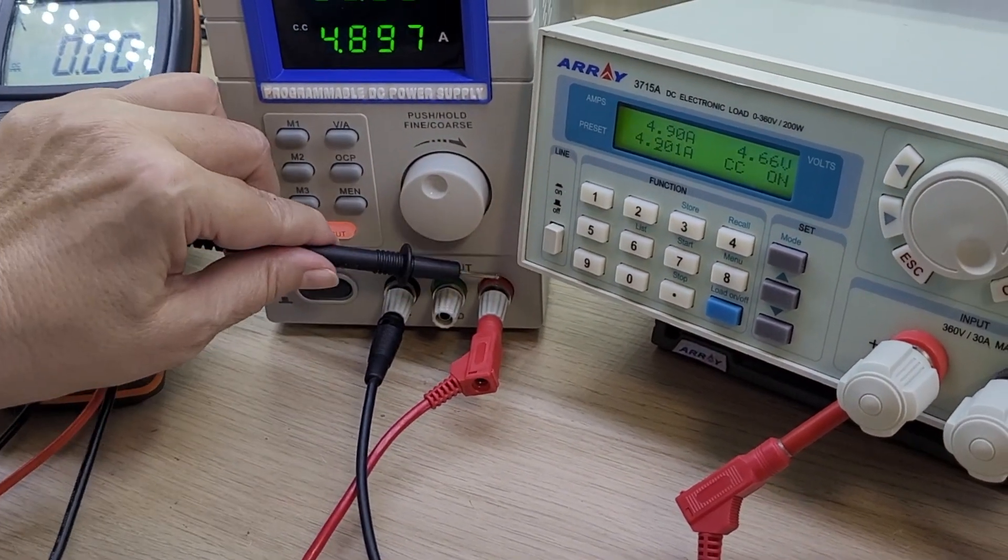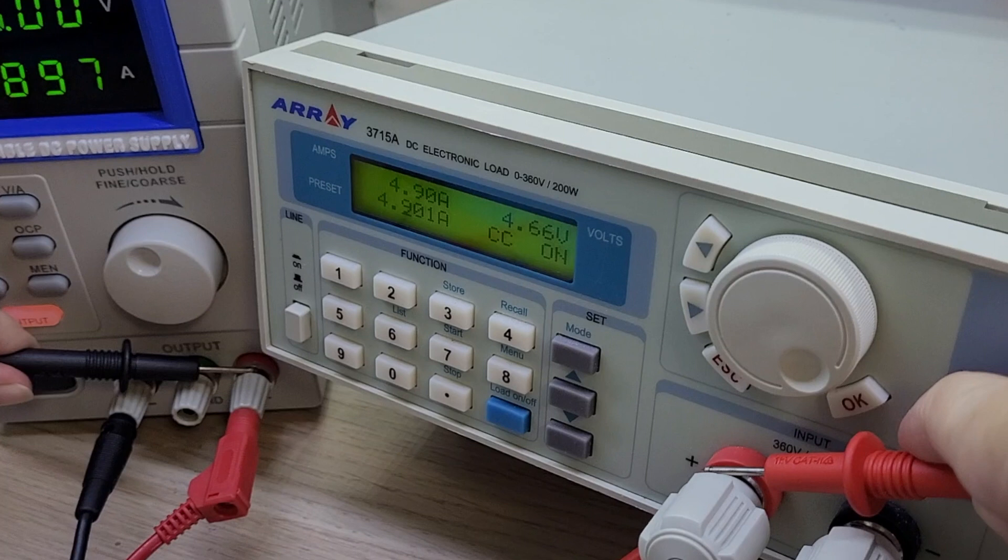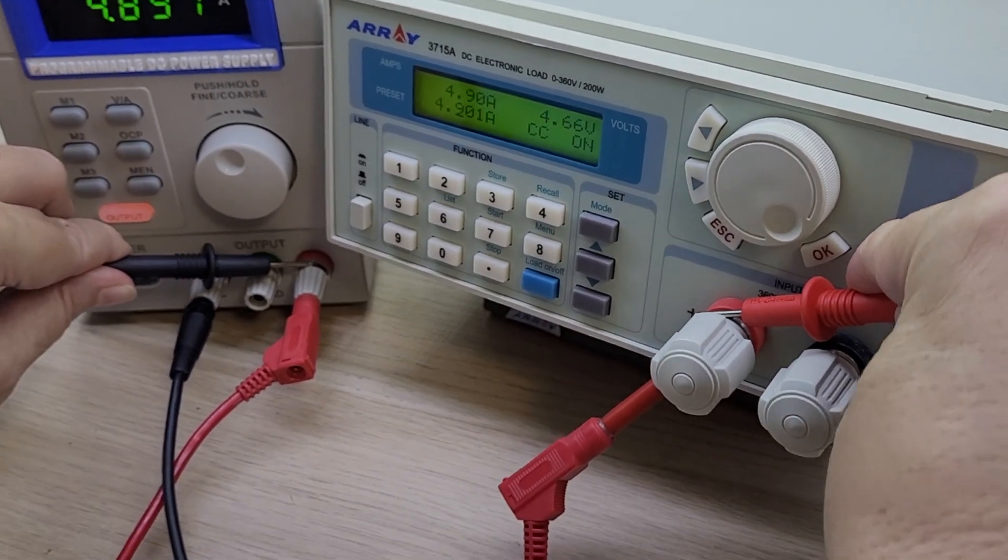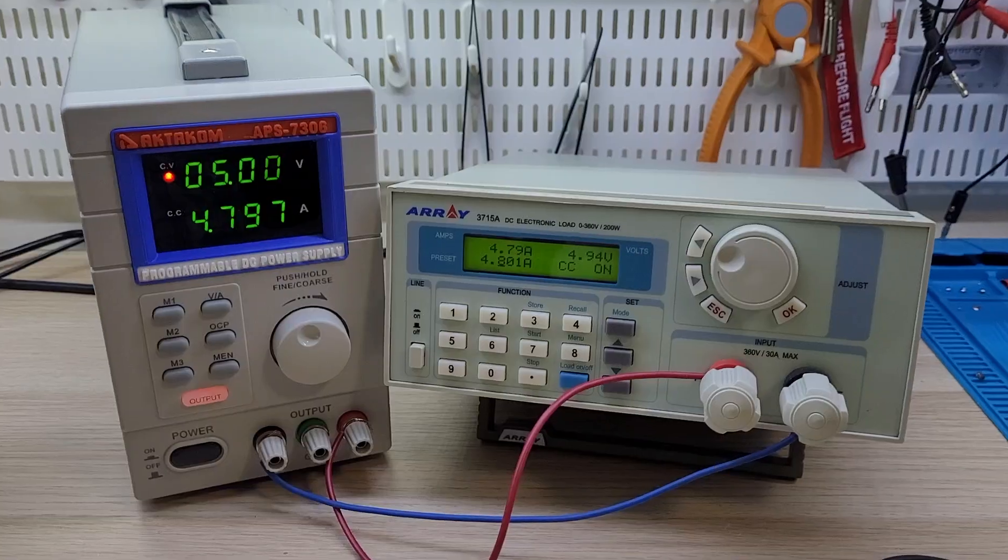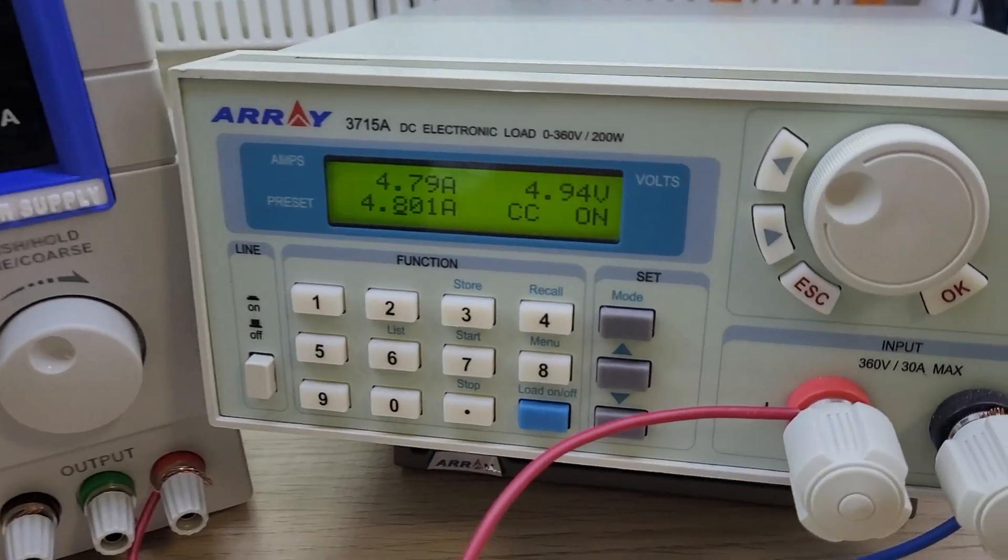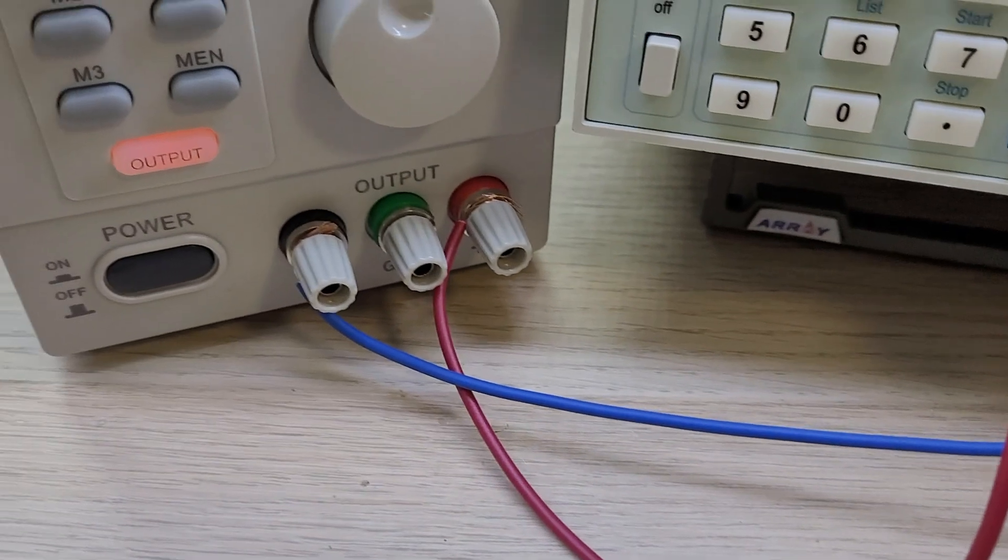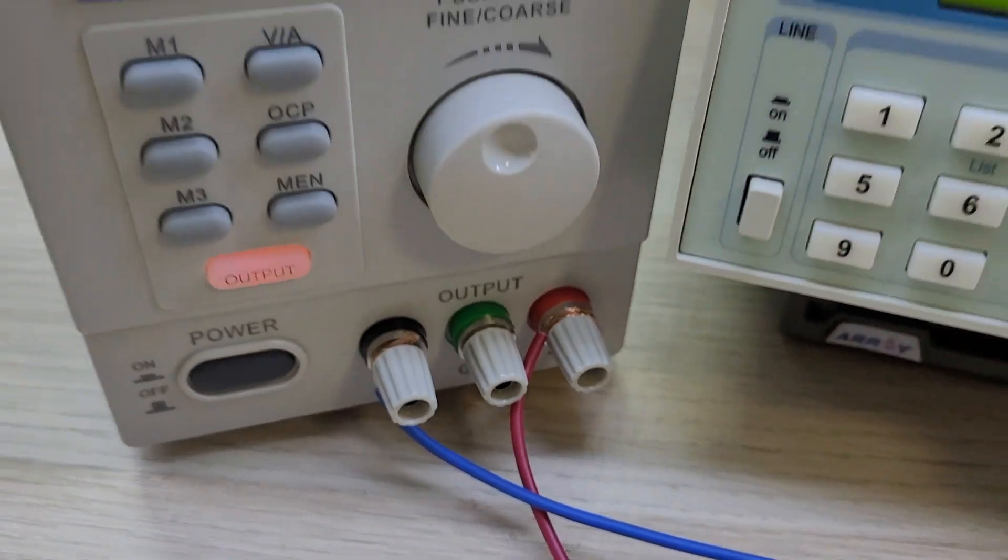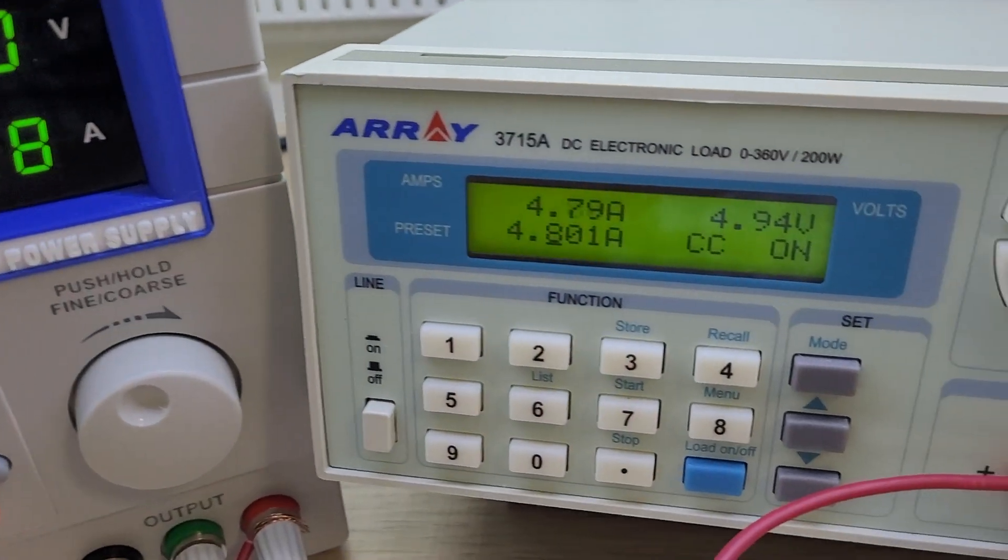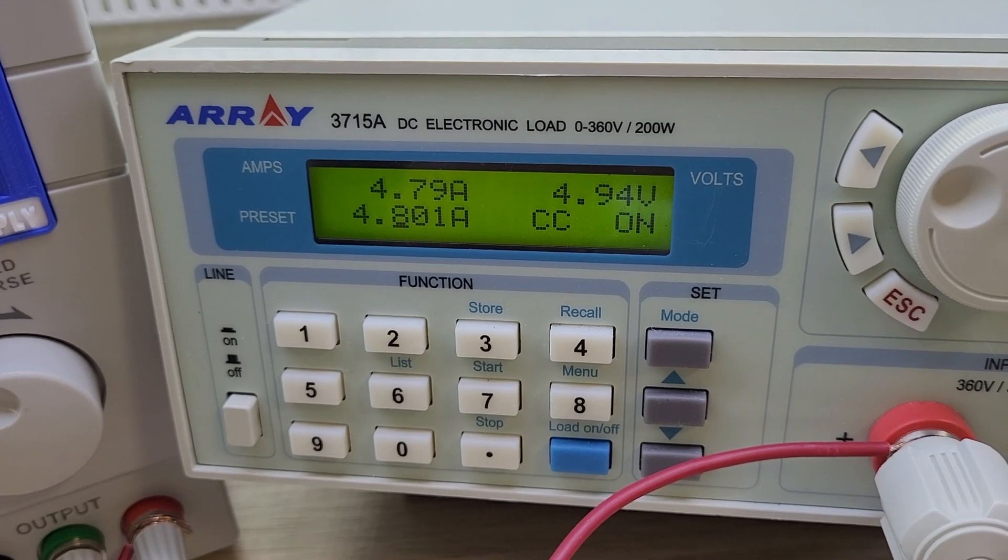Looking further for the voltage difference, we measure the voltage on the wires and we get about half of the losses on each of the two wires. Having replaced the wires, we see that the difference in readings 5V on the display of APS7306 power supply and 4.94V on the electronic load has decreased significantly.